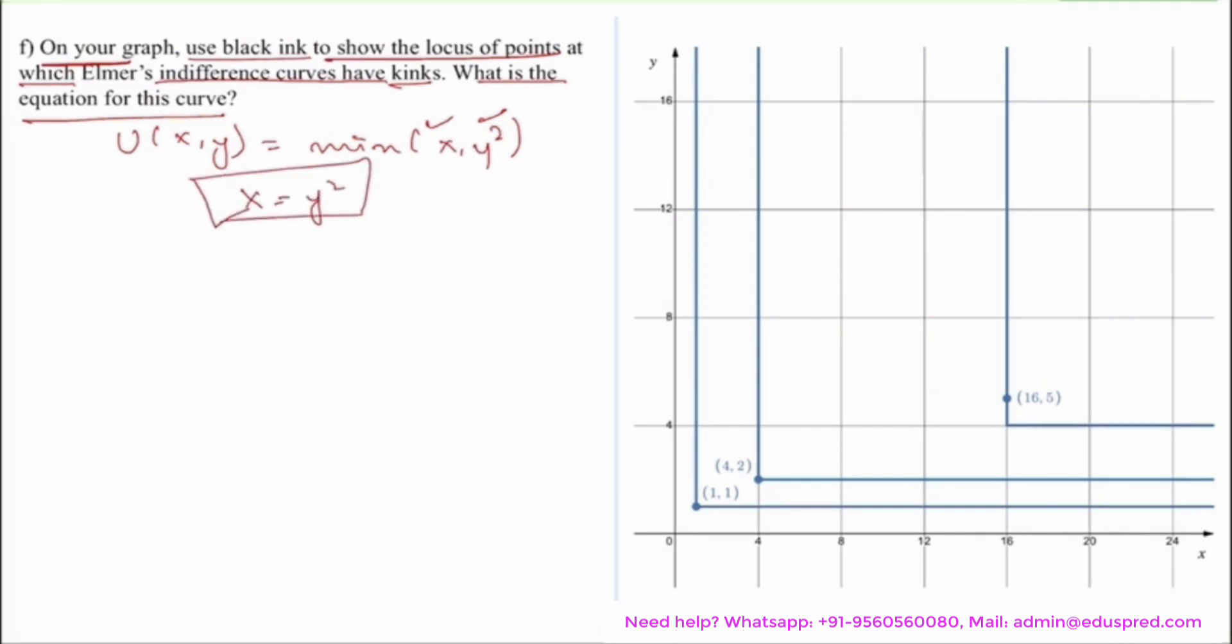So simply drawing this graph which would look like a parabola, this is the black graph. So what we have basically done is we have joined this point, this point and this point. These are your kink points. Joining these, you would be able to get your black curve which has the equation of x equals y squared.